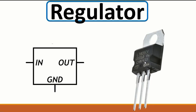For a voltage regulator, we always have an input voltage, an output voltage, and a ground. For example, it might take 12 volts in and output 5 volts. In the next videos I will show you how to use the reference number and how to look up the datasheet for any component.